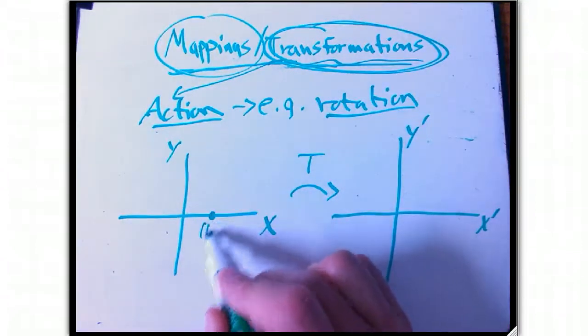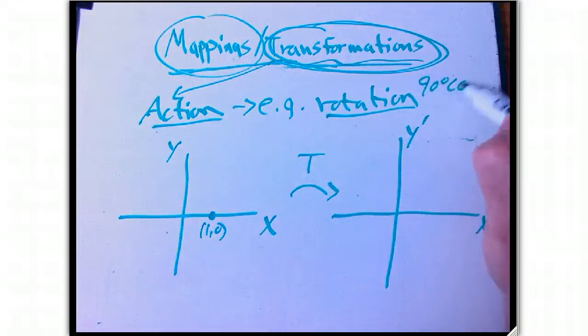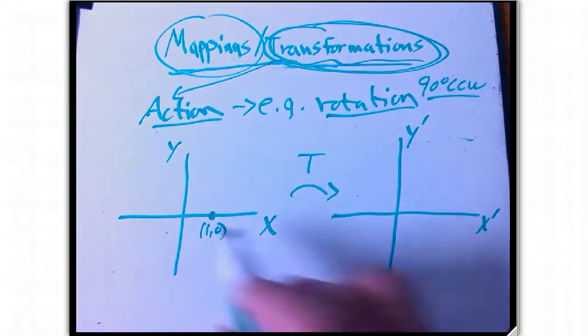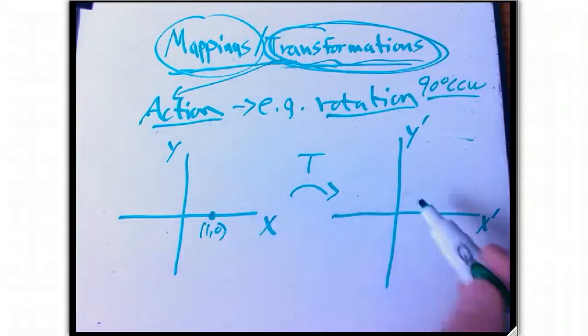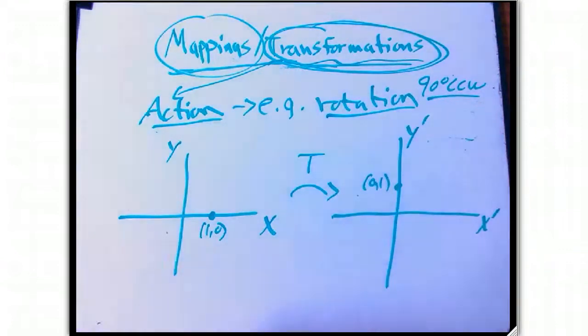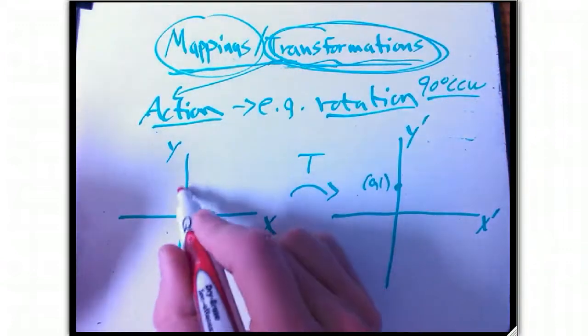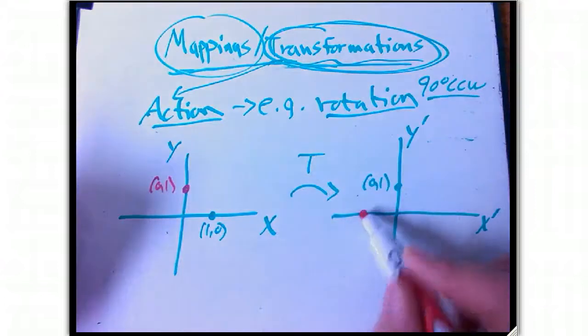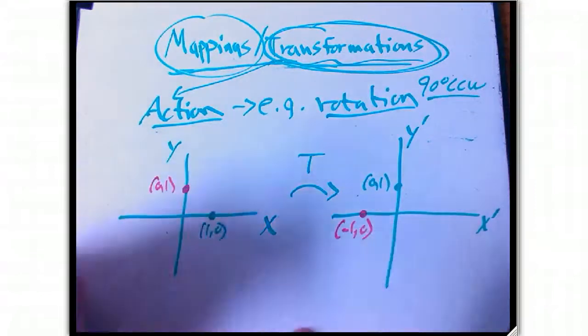So suppose we look at a transformation that's a rotation. We have done this because this is a linear transformation. If this is 1, 0, let's say it's a rotation 90 degrees counterclockwise to be simple. 1, 0 is going to end up at 0, 1. And let's do it in red. 0, 1 is going to end up at minus 1, 0.